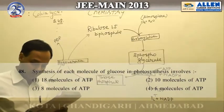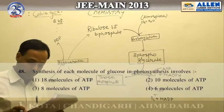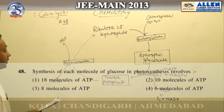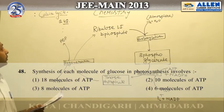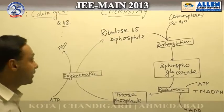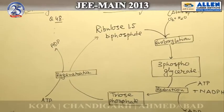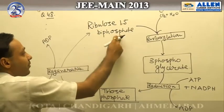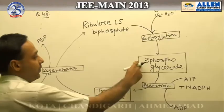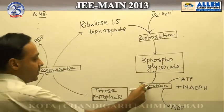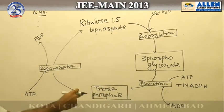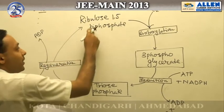Question 48: Synthesis of each molecule of glucose in photosynthesis involves — to synthesize glucose, the cycle used is called the Calvin cycle. The starting compound is ribulose-1,5-bisphosphate. The first step is carboxylation, giving 3-phosphoglycerate. The second step is reduction, converting 3-phosphoglycerate into triose phosphate. Then triose phosphate is regenerated into ribulose-1,5-bisphosphate.